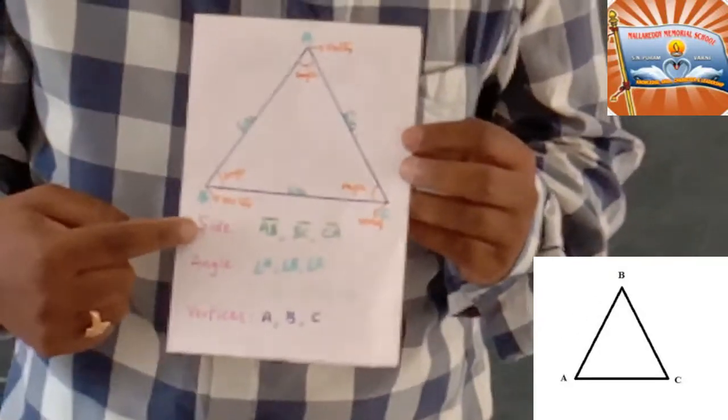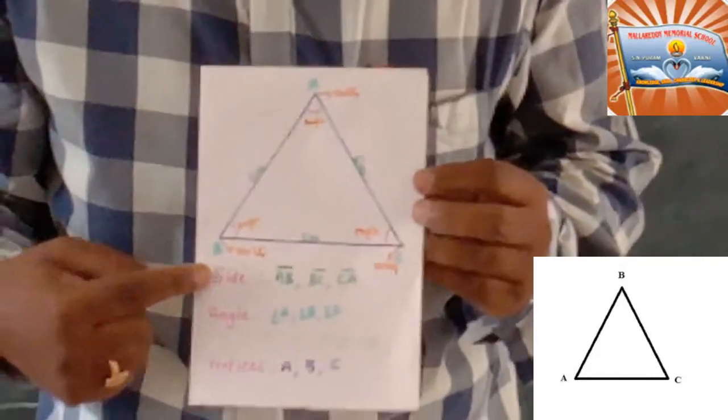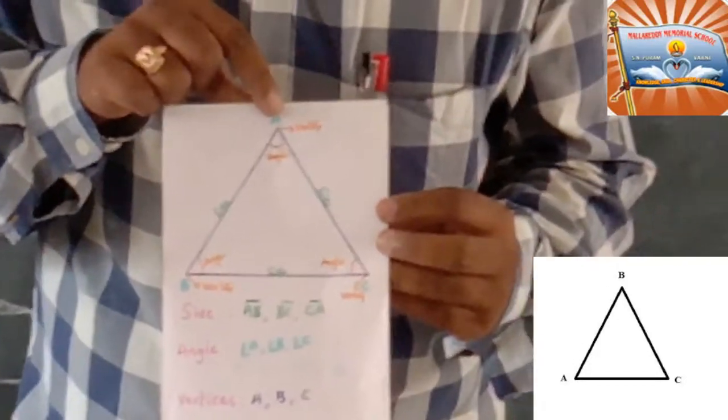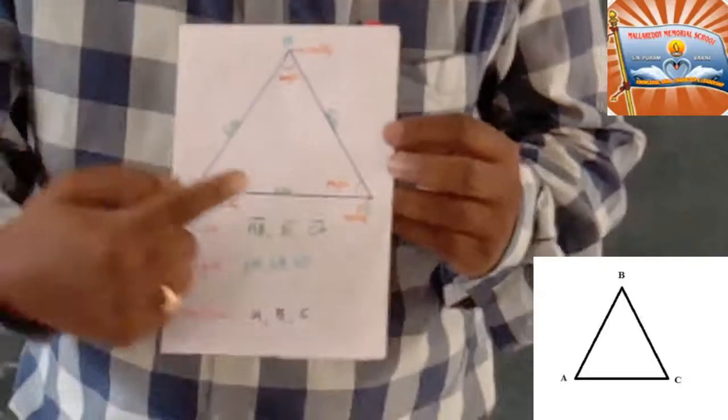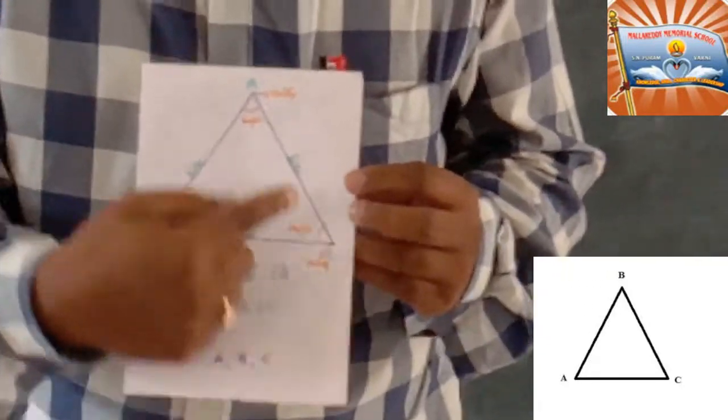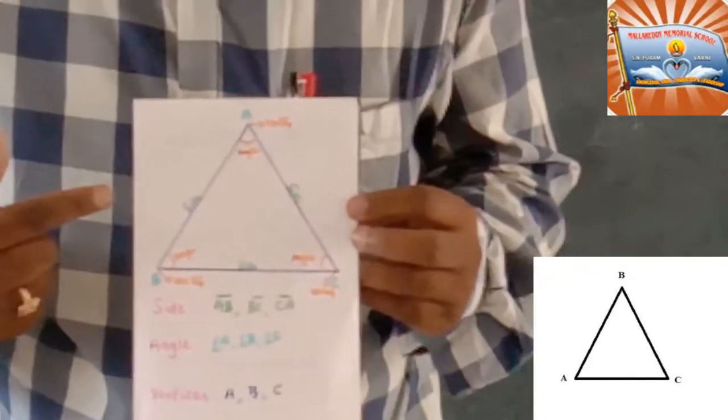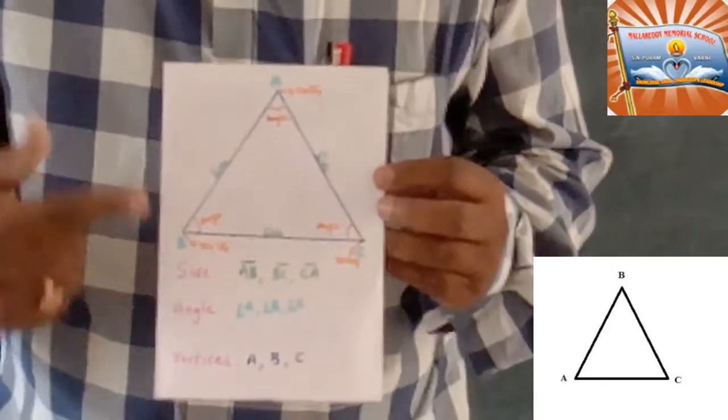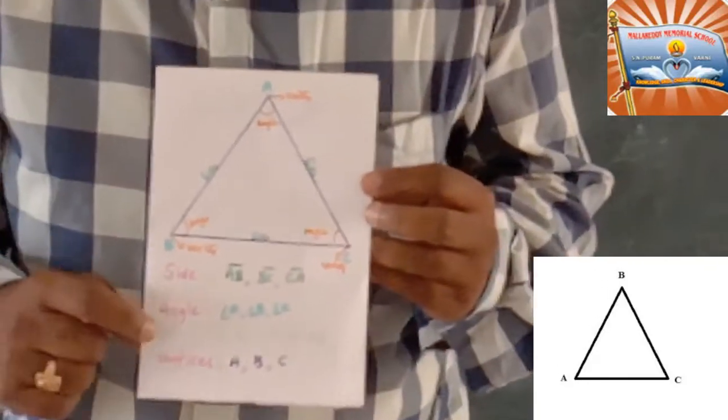As well as, when we talk about angles, angle A, angle B, angle C, there are three angles of this triangle ABC.